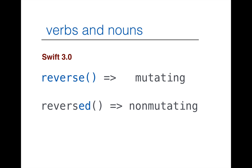Similarly, `reverse` is mutating — it performs the action of reversing the objects in a collection. `reversed` (past tense) is non-mutating, meaning it returns the reversed values, for example printing them to the console, without modifying the original object. There's a clear nuance and difference between the two, and we'll see that in action in upcoming demos.